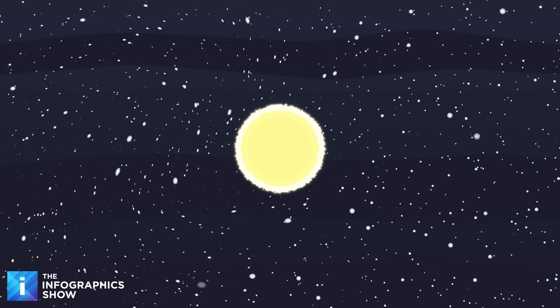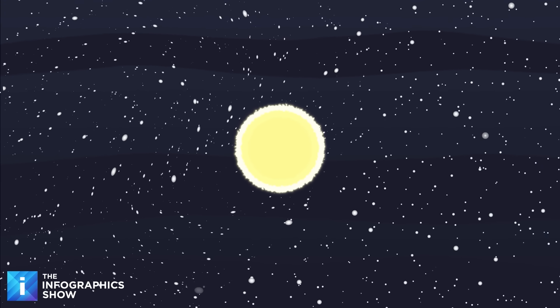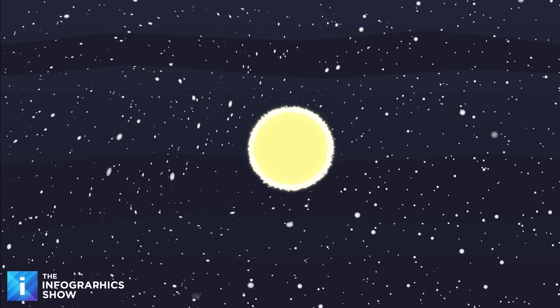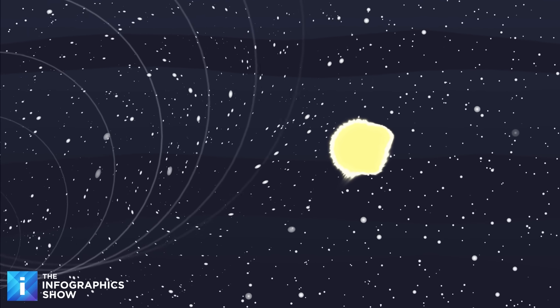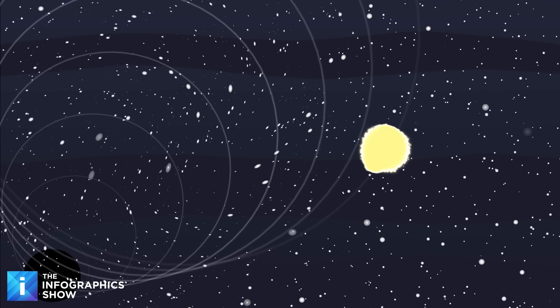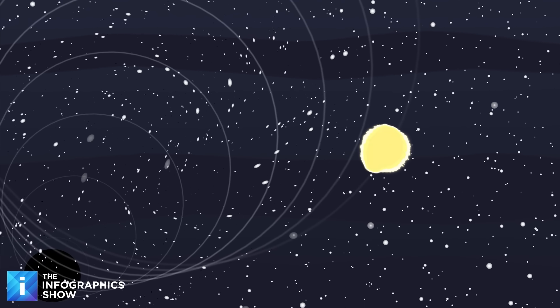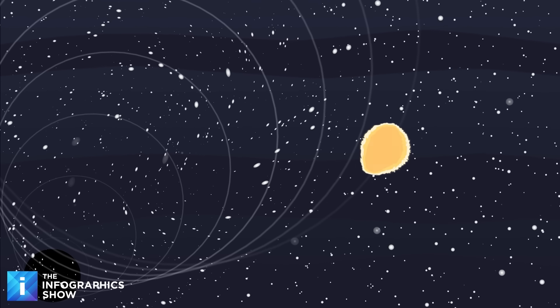When you get close to a black hole, time doesn't just slow down, it gets tortured. If you watched an object approaching a black hole's event horizon, you would see it slow down, becoming redder, dimmer, and more distorted. From your perspective, it would appear to freeze at the edge, its final moment stretched across eternity.